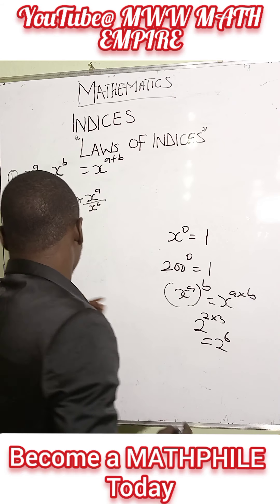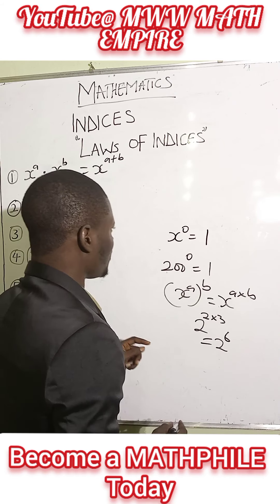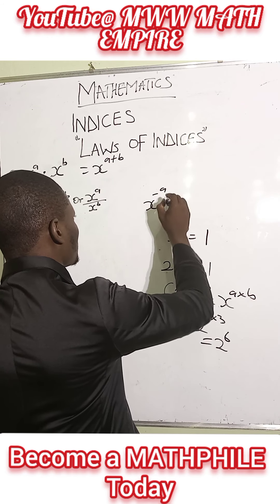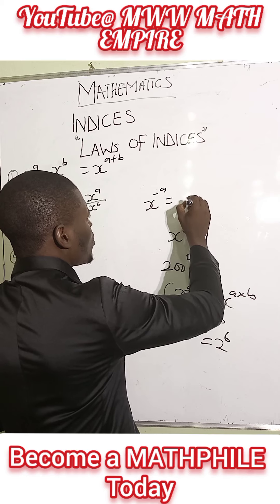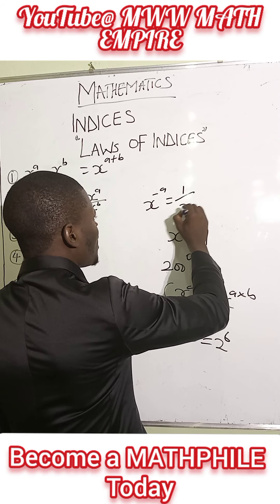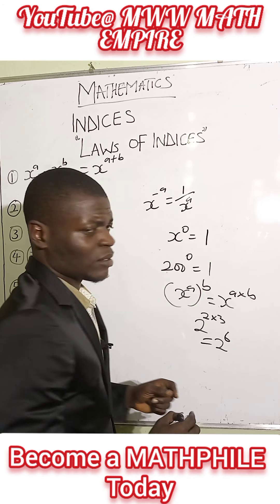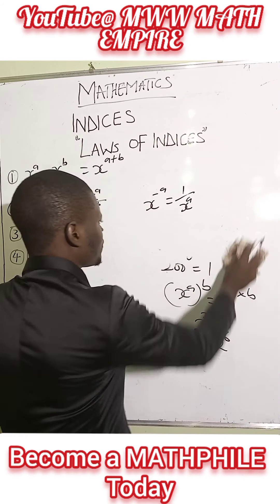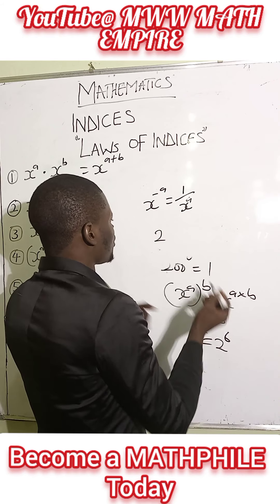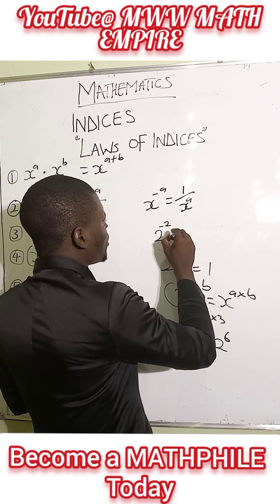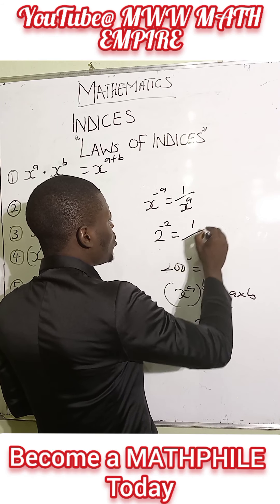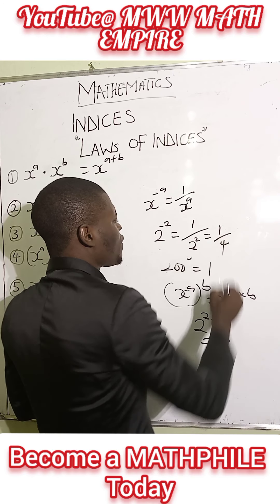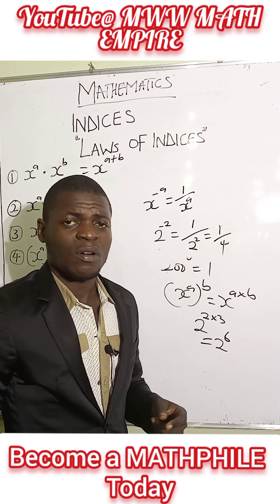We have the fifth one that reads: x raised to the power of minus a. This is equal to 1 all over x raised to the power of a. Using a known variable: 2 raised to the power of minus 2 is equal to 1 over 2 raised to the power of 2, which is 1 over 4.